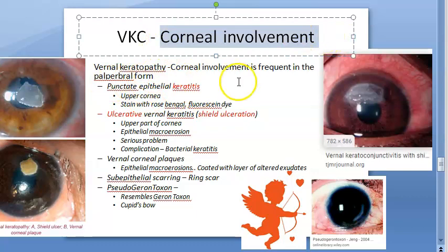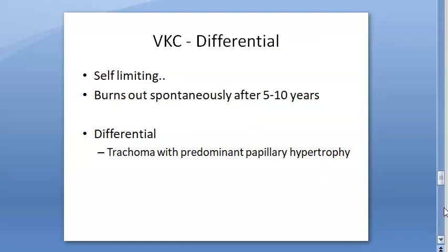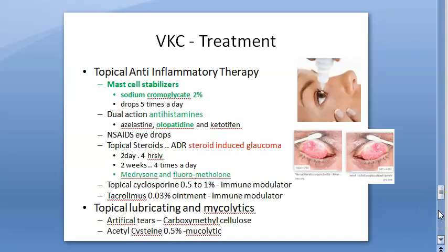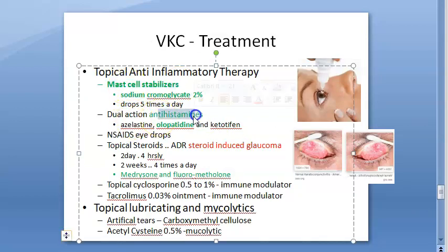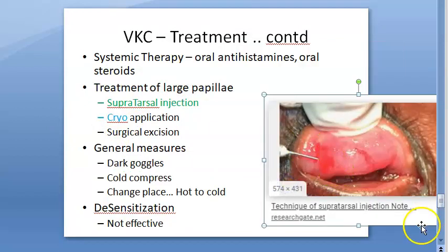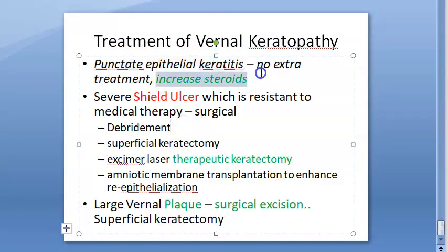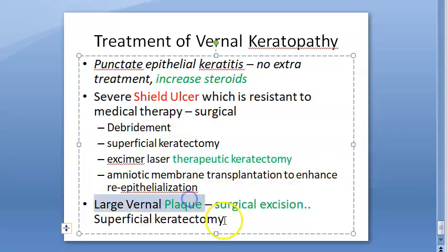Corneal involvement in vernal keratoconjunctivitis includes punctate epithelial keratitis, ulcerative vernal keratitis, shield ulceration, vernal corneal plaques, sub-epithelial scarring, ring scar, and pseudogerontoxon. Treatment: mast cell stabilizers, antihistamines, steroids. For very large papillae: supratarsal injection, cryo application, or surgical excision. For corneal problems: increased steroids, therapeutic keratectomy, superficial keratectomy, surgical excision of large vernal plaques.